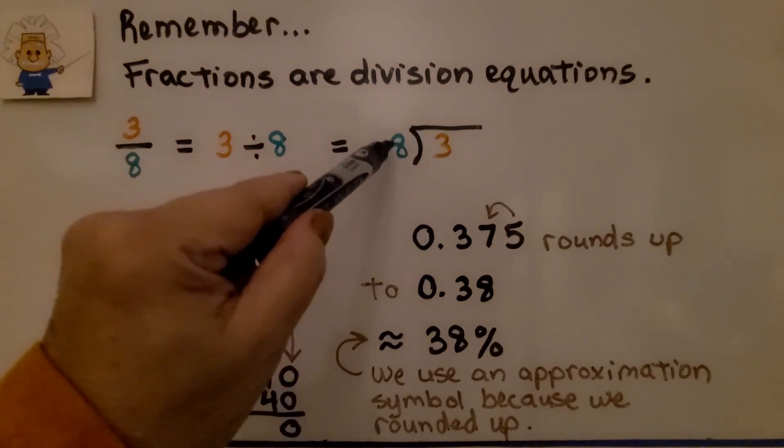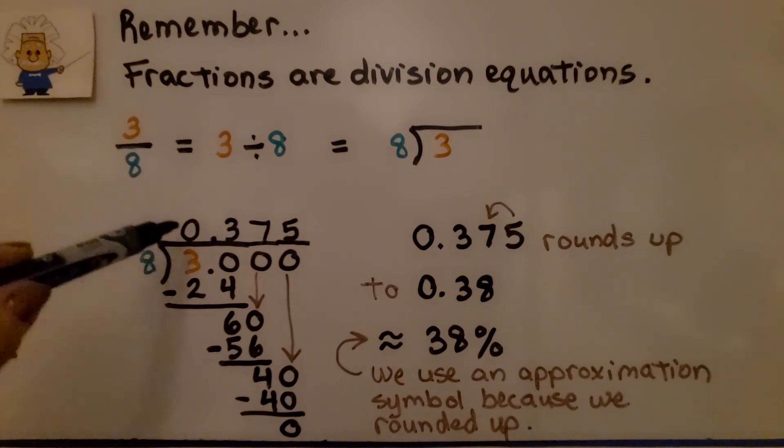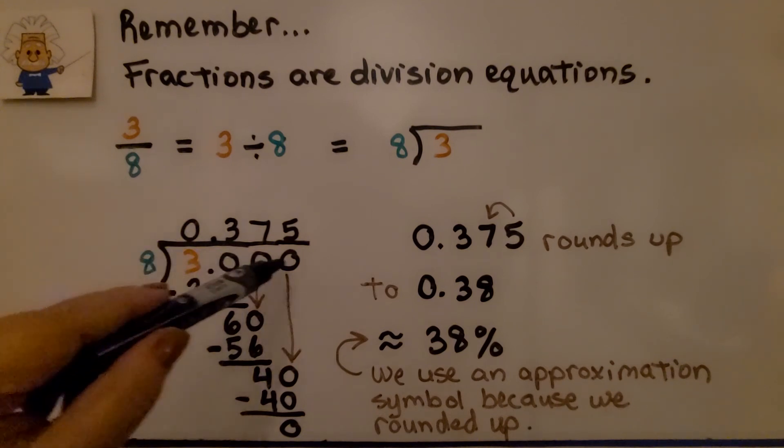When we do long division, we have 3 divided by 8. We're looking at how many times 8 will fit into 3. And it won't. So we need to do decimals, don't we?